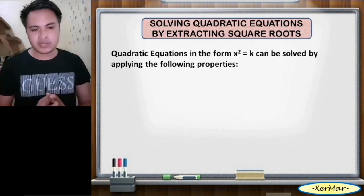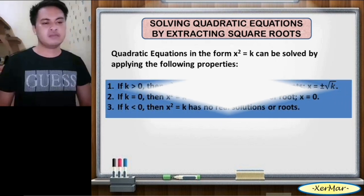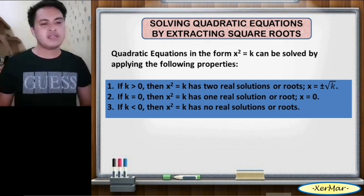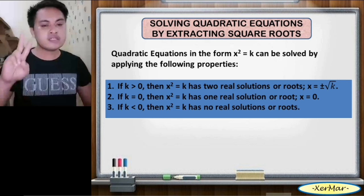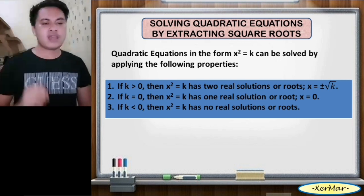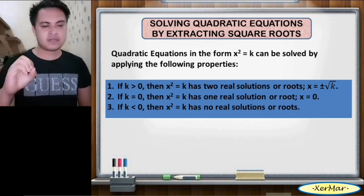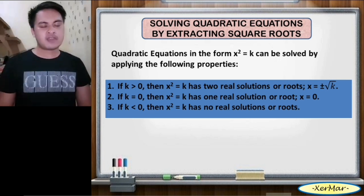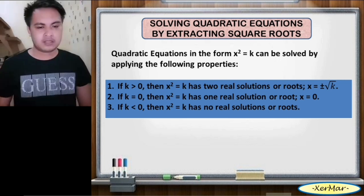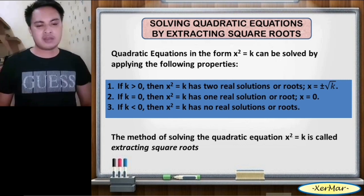Quadratic equations in the form x squared equals k can be solved by applying the following properties. Number 1: if k is greater than 0, then x squared equals k has two real solutions or roots — that is, x equals positive or negative square root of k. Number 2: if k equals 0, then x squared equals k has one real solution or root, and that is 0. Number 3: if k is less than 0, then x squared equals k has no real solution or roots. The method of solving a quadratic equation in the form x squared equals k is called extracting square roots.